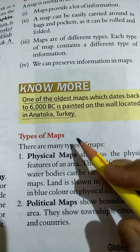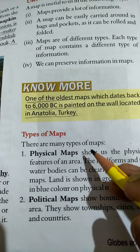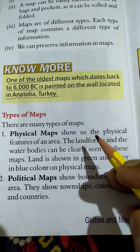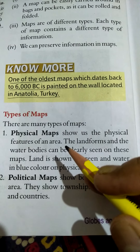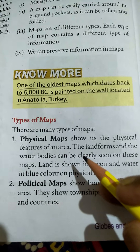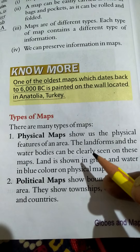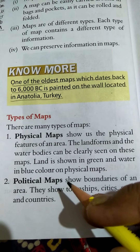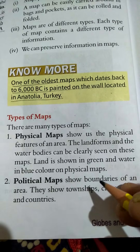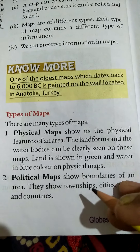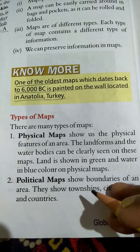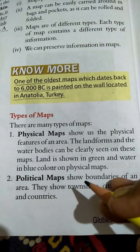There are different types of maps. The first one is a physical map. Physical maps show us the physical features like mountains, plateaus, plains, etc. Political maps show the political boundaries — like towns, cities, states, and capitals are shown on the political map.